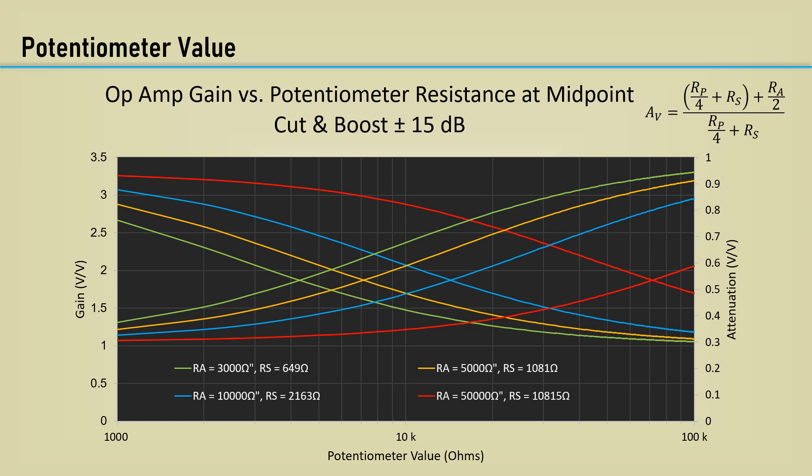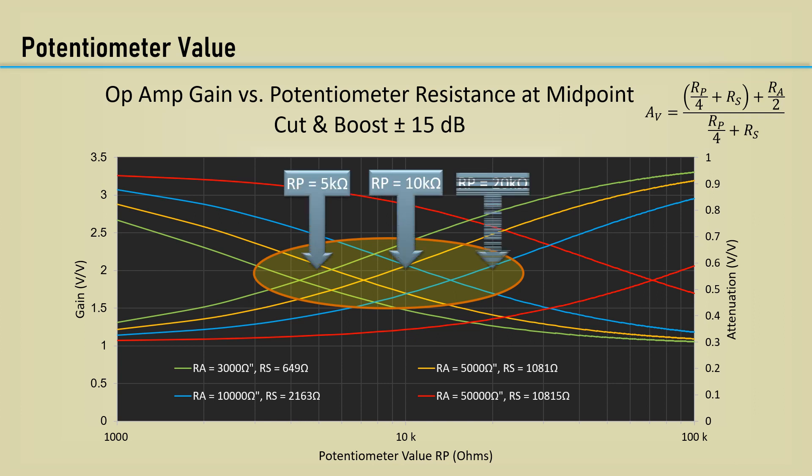At a potentiometer value of around 14K, this gain is only 1.88, and the attenuation is 0.531. This looks like an optimum potentiometer value. While a wide range of potentiometer values can be used, it would probably be best to keep it in this range. It's quite common to see 10K pots used with an RA value of 10K as well. With an RA of 10K, this range supports 5K, 10K, and 20K pots.